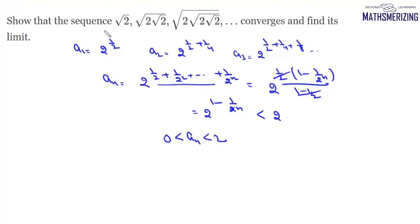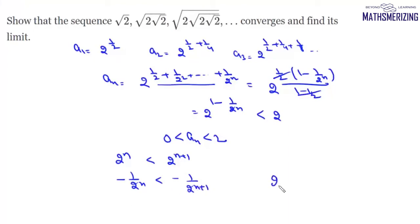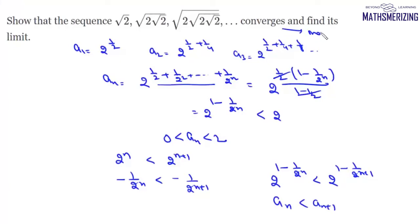Now we prove the sequence is monotonic. We know 2ⁿ < 2^(n+1), which implies −1/2ⁿ > −1/2^(n+1), so 1 − 1/2ⁿ < 1 − 1/2^(n+1). Therefore 2^(1 − 1/2ⁿ) < 2^(1 − 1/2^(n+1)), meaning aₙ < aₙ₊₁. The sequence is monotonically increasing.